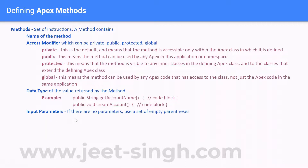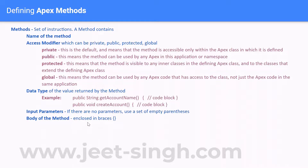If there are input parameters you want to supply to the method, you define them inside the parentheses. If there are no input parameters, you still need to include the empty parentheses — they must always be defined. Finally, the body of the method — the actual code — goes within the curly braces.